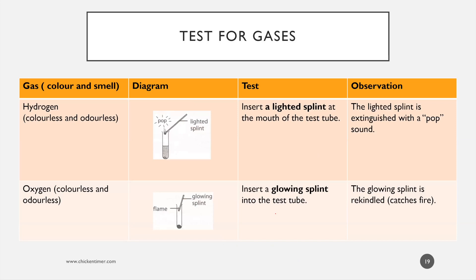To test for gas - hydrogen always uses a lighted splint. In your flow chart, if they say use a lighted splint and there's a pop, that means it's confirmed hydrogen. If it's a glowing splint and the splint rekindles, it's confirmed oxygen. There's no other possibility.